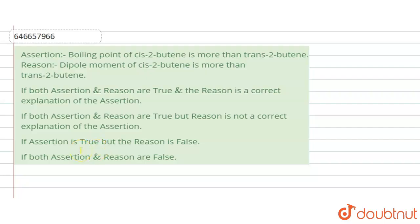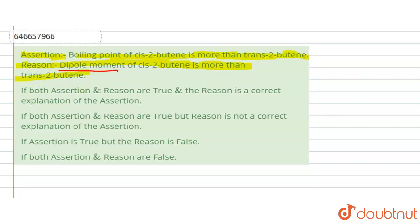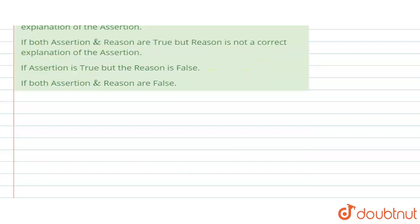Hi everyone, let's take a question. This is an assertion and reason based question. The assertion states that the boiling point of cis-2-butene is more than that of trans-2-butene. The reason states that the dipole moment of cis-2-butene is more than that of trans-2-butene. First, let's discuss dipole moment.